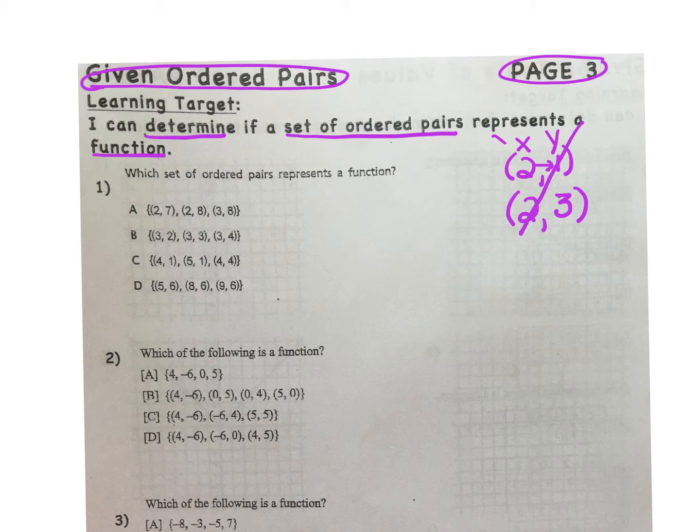However, if 2 outputs a 1, and another input value, such as 5, outputs a 1, that is a valid function. Both the 2 and the 5 can output or have the same favorite at the same time.